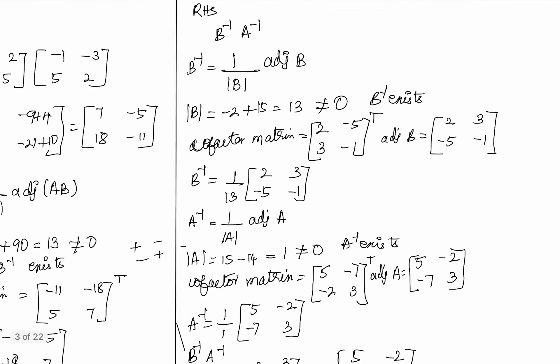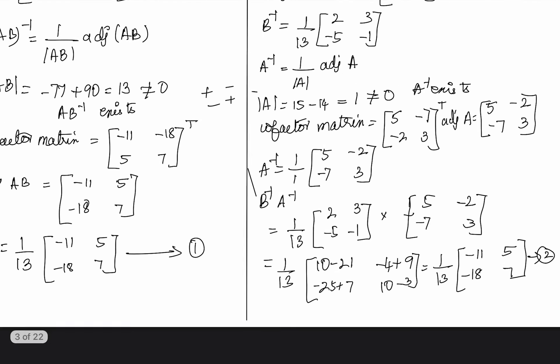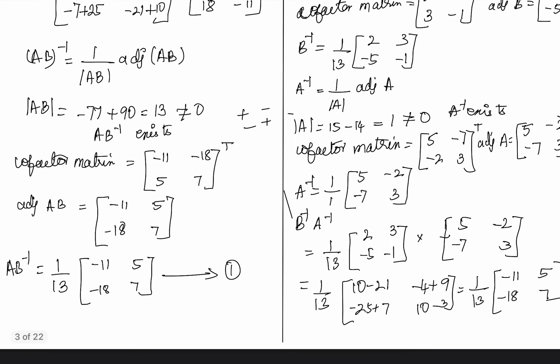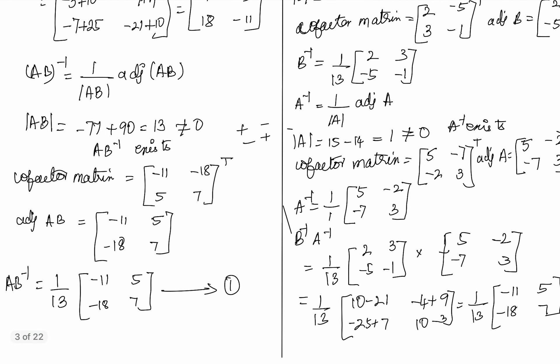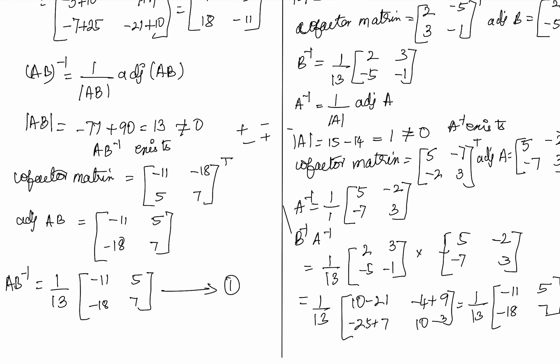From equations 1 and 2, LHS equals RHS. Hence verified that (AB)⁻¹ equals B⁻¹ into A⁻¹. Thank you, students.